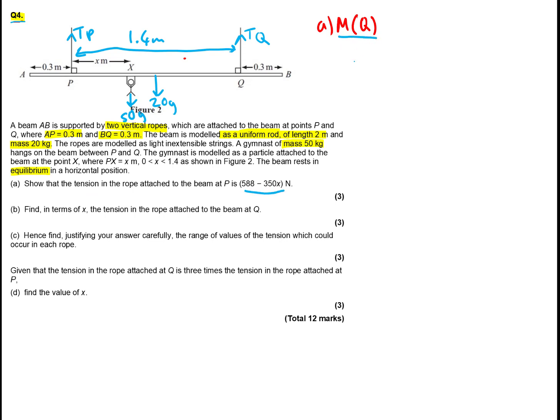We're going to take moments about Q. We take moments about Q because we want to find the tension at P. If we take moments at A, we'd get Tp and Tq both going anti-clockwise and we don't know Tq. So if we take moments at Q, the distance is 0, so 0 times Tq is 0 — that discounts Tq and allows us to solve this first part.